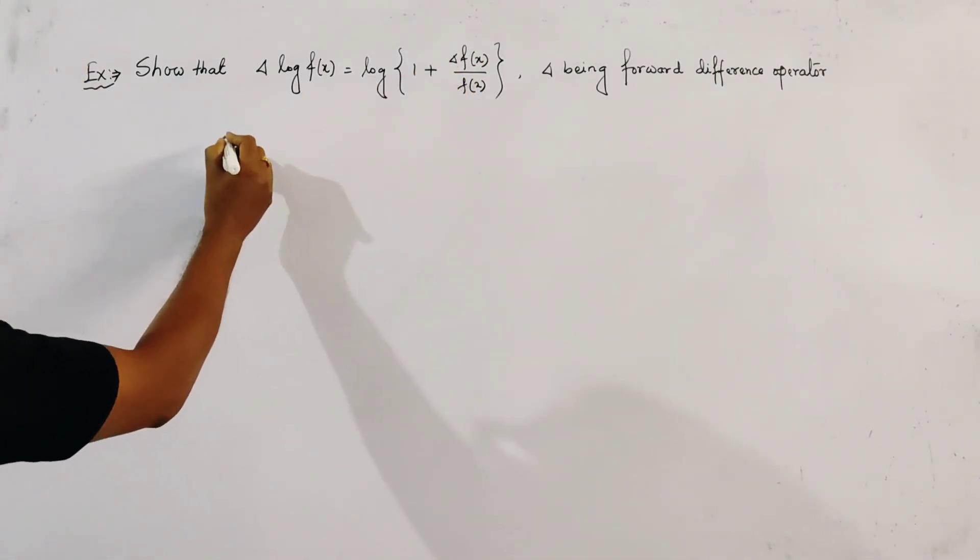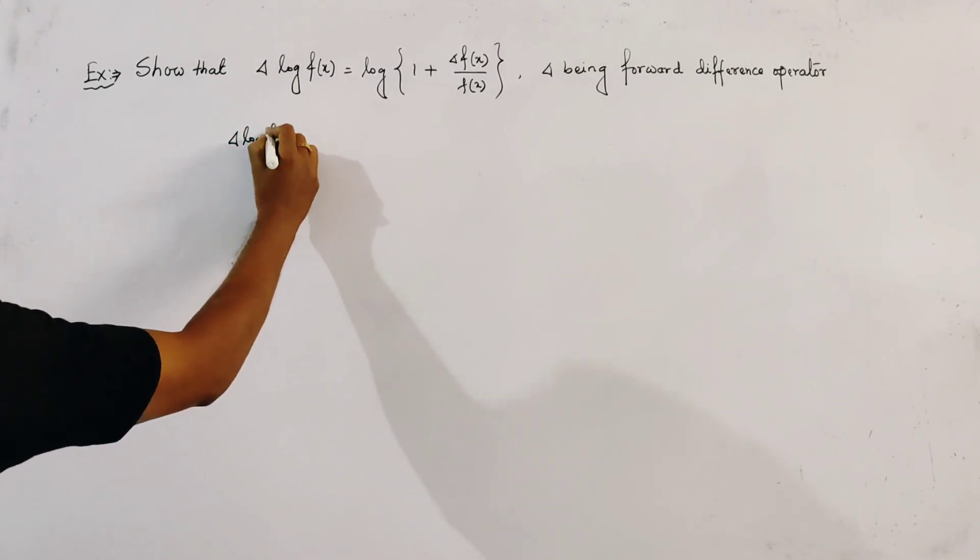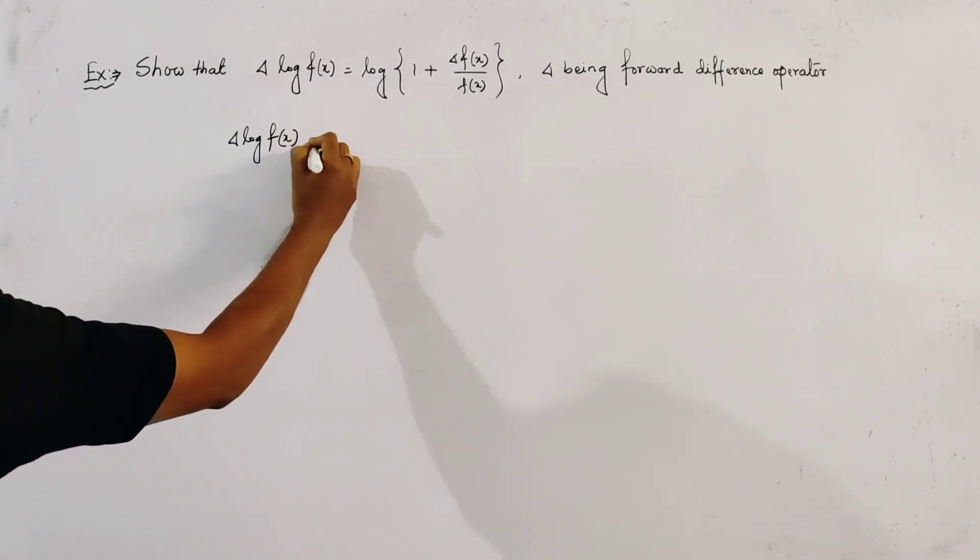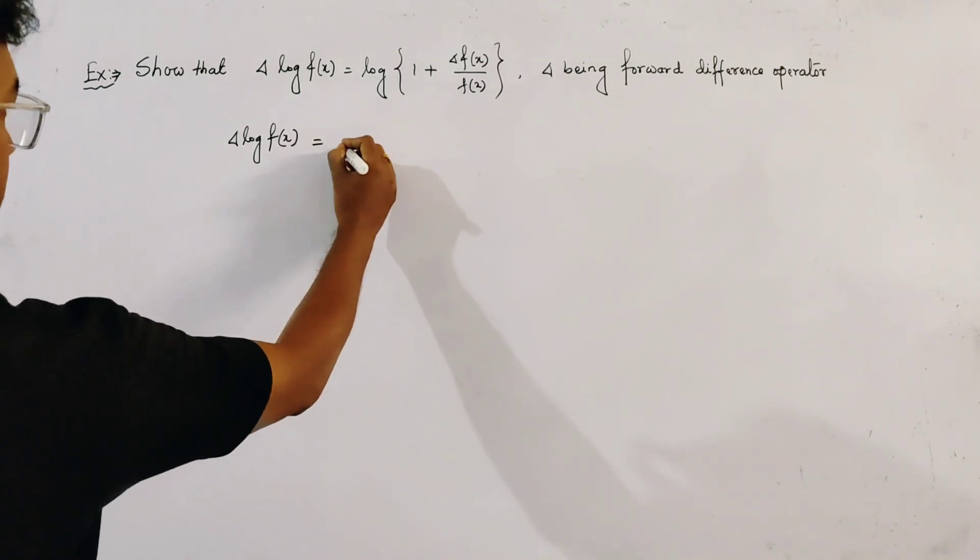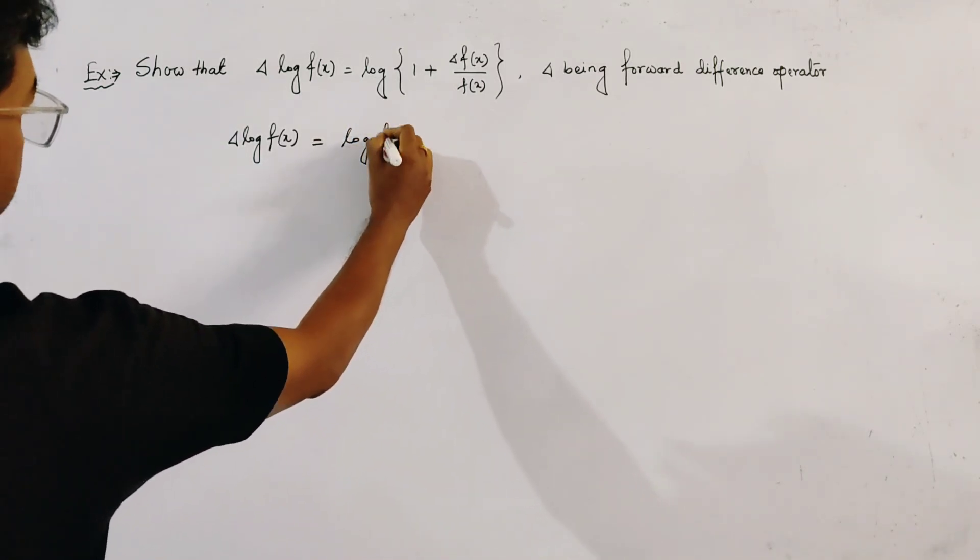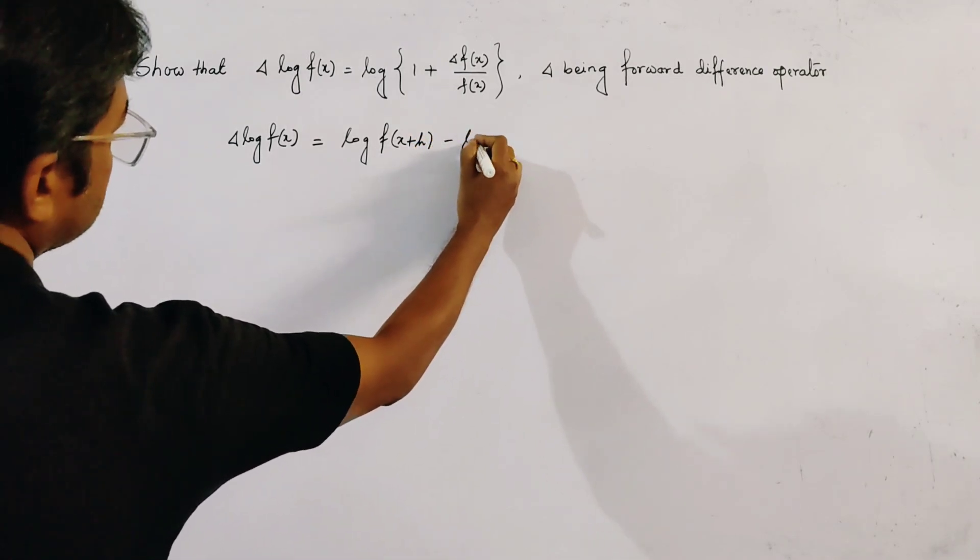We start from the left side, and the left side is delta log f of x. We know that the definition of log of f of x is given by log of f of x plus h minus log of f of x.